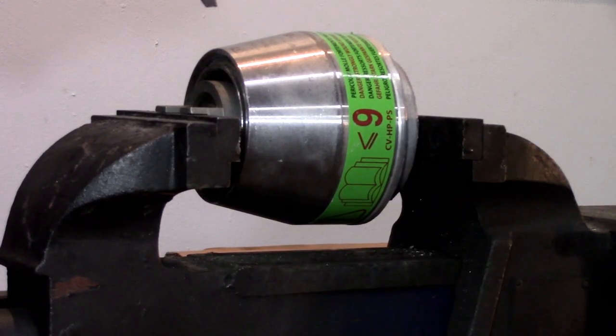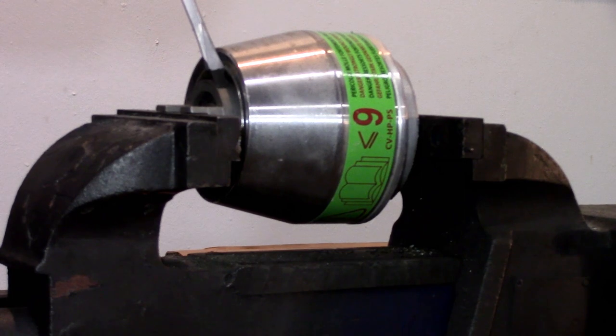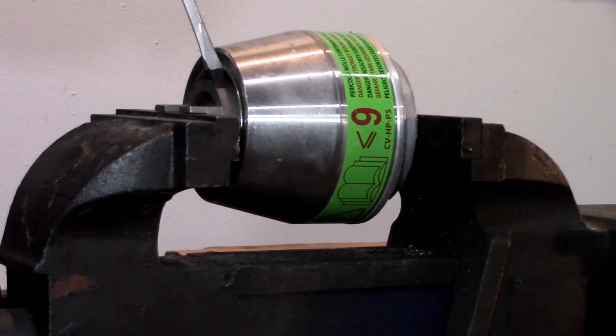Turn your vise jaw slowly until you hear it pop. This indicates that the inner and outer clutch cones have now been separated.